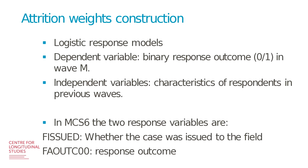Attrition weights are constructed using logistic response models. The dependent variable is a binary response outcome taking the value of zero if the respondent did not participate in the survey and one if they participated. The independent variables can include any characteristics of respondents from any of the previous waves. In MCS6, we have two response variables: F_issued, a flag variable indicating whether the family was issued to the field, and FA_outcome, a response outcome that tells us whether the family was productive — whether they participated in the survey or not — and gives us the different types of non-response.